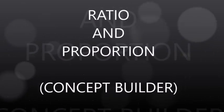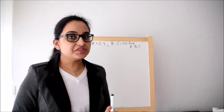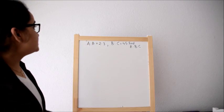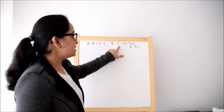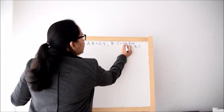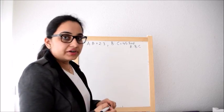So now I will start with my today's topic. Now this is the problem on ratio and proportion. The problem says that A is to B is 2 is to 3, B is to C is 4 is to 5, then find A is to B is to C.